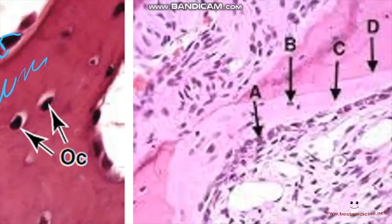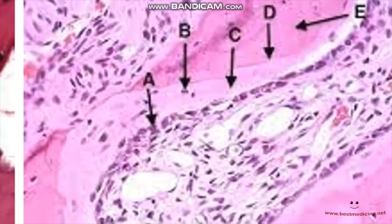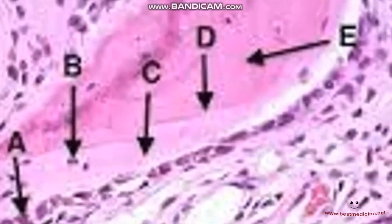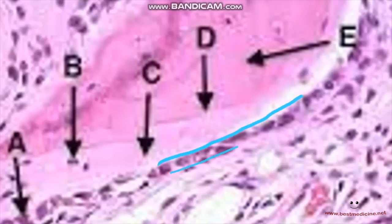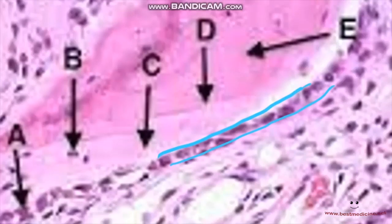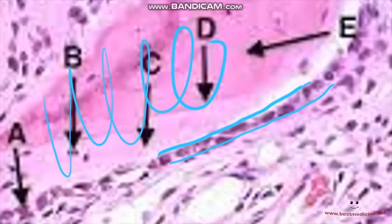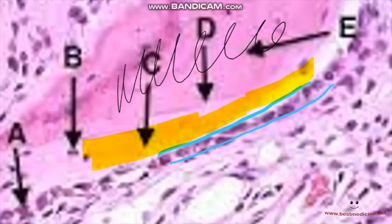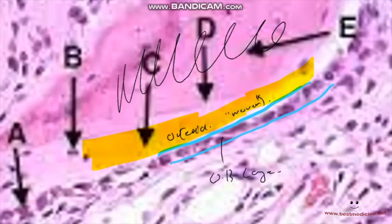In another microscopic slide of the periosteum, we have the simple cuboidal layer of very densely stained cells. All of this part is bone. There are two parts: a lightly stained part — the osteoid — and a densely stained, more pink part which is the bone matrix.